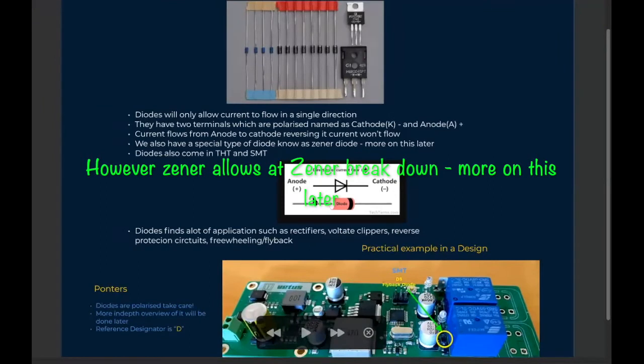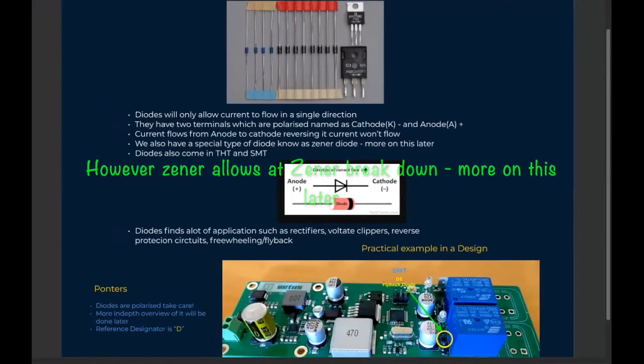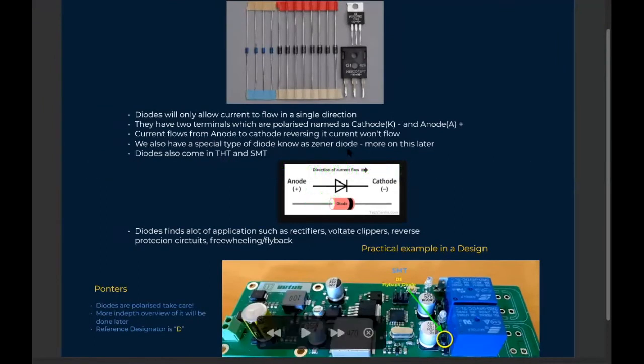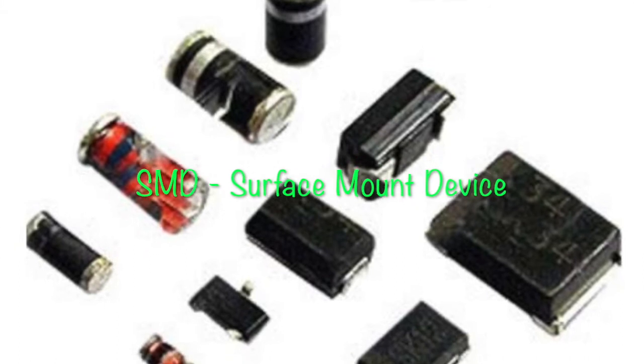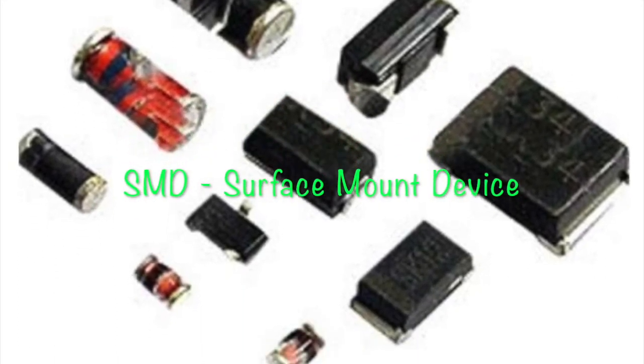You also do have some special types of diodes like the Zener diode, and we'll dive deeper on this later. So diodes also come in two packages as well - they come as SMT and THT.